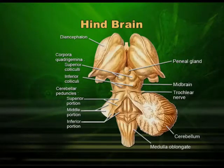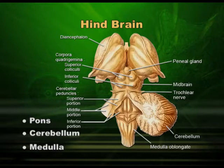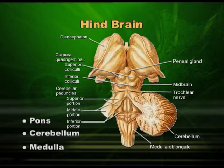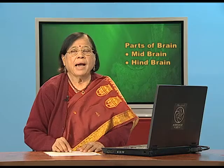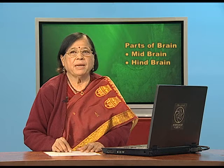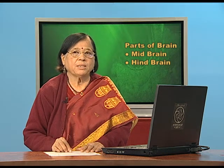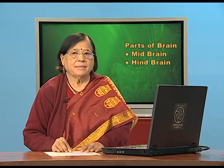The hindbrain has organs or parts like pons, cerebellum, and medulla. Pons is just below the midbrain and is very important. When we come to the cerebellum, you can see in this diagram — it has come to one side to increase the surface area to accommodate more nerve cells. After the hindbrain comes the spinal cord, which runs through our spine, through our back.